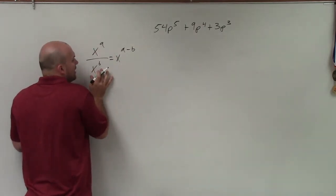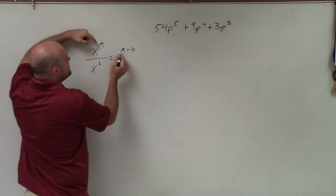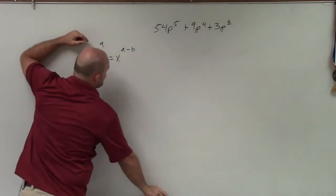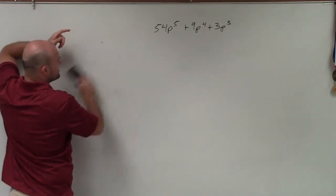Because when we divide a variable with an exponent into another variable with the same base, all we do is subtract the exponent. So as long as I can do that and I have a positive number, then it evenly divides into it.